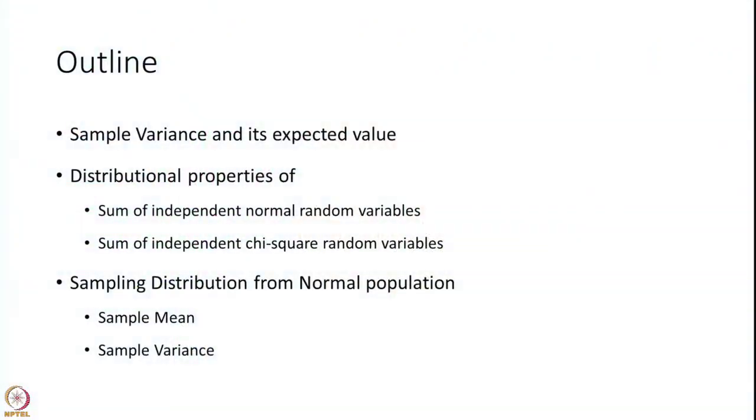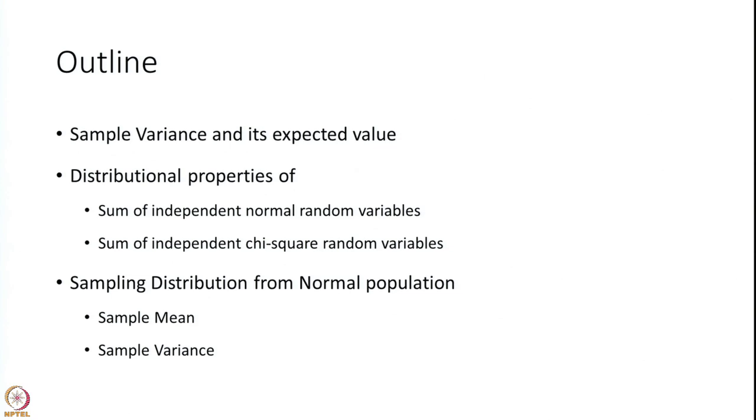In the present session we are going to talk about the sample variance and its expected value. Then we will discuss certain distributional properties of sums of independent normal variables and sums of independent chi-square random variables. We will use these properties to derive the sampling distributions from a normal population — specifically, the distribution of sample mean and the distribution of sample variance.